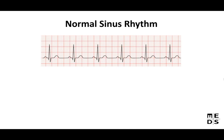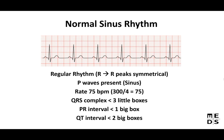First, here's what a normal sinus rhythm looks like. You'll have a regular rhythm — from R to R the peaks are even and symmetrical throughout. The P wave is present, and the rate is about 75 BPM (300 divided by 4 big boxes). The PR interval is less than one big box, QRS less than three small boxes, and the QT interval less than two big boxes.